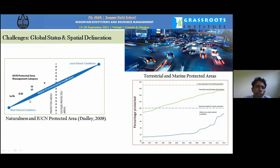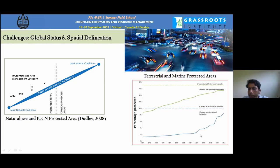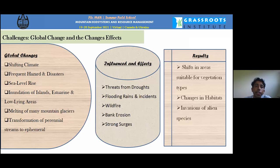In terrestrial and marine protected areas, we have been able to build more protected areas in ocean environments than on land. However, after 2000 — in the last one or two decades — more protected areas have been established on land as countries and people increasingly realize why protected areas are needed.